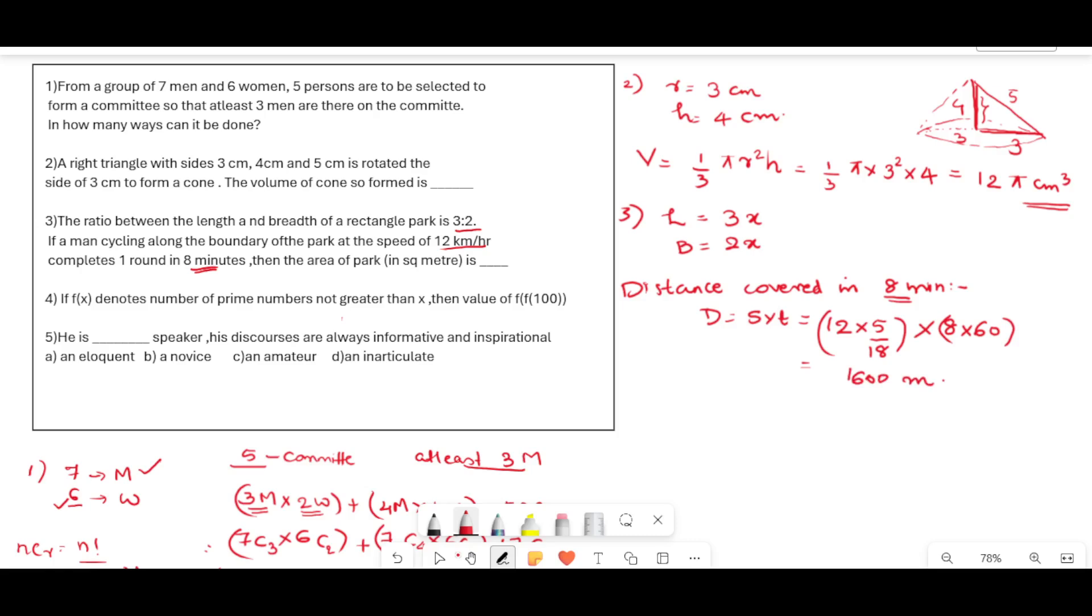Now this is equal to 1600 meters. Next, he completes one round in 8 minutes. That means in 8 minutes the distance covered is equal to the perimeter of the park. Since he completes one round in 8 minutes, so this distance covered, that is 1600, can be equated to the perimeter of the park. That is 2 into L plus B, that is 3x plus 2x. This is equal to 5x into 2, that is 10x. 10x equals 1600. Then what is x? x is equal to 160 meters.